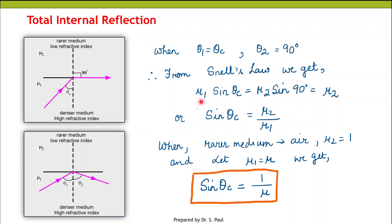We found that sin θc is equal to μ2 by μ1, where μ1 is the refractive index of the denser medium and μ2 is the refractive index of the rarer medium. θc is the angle of incidence at which the refracted ray grazes the boundary between the rarer medium and the denser medium.